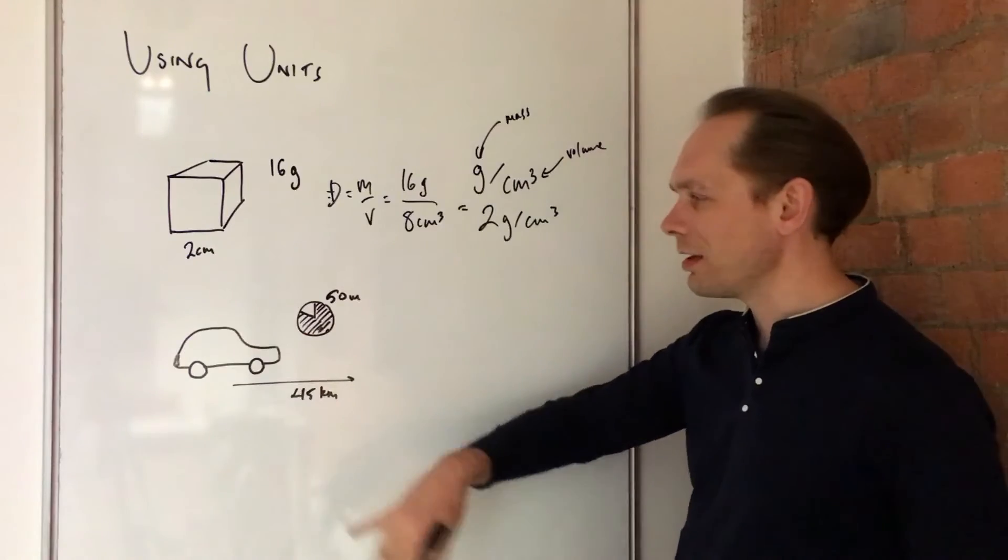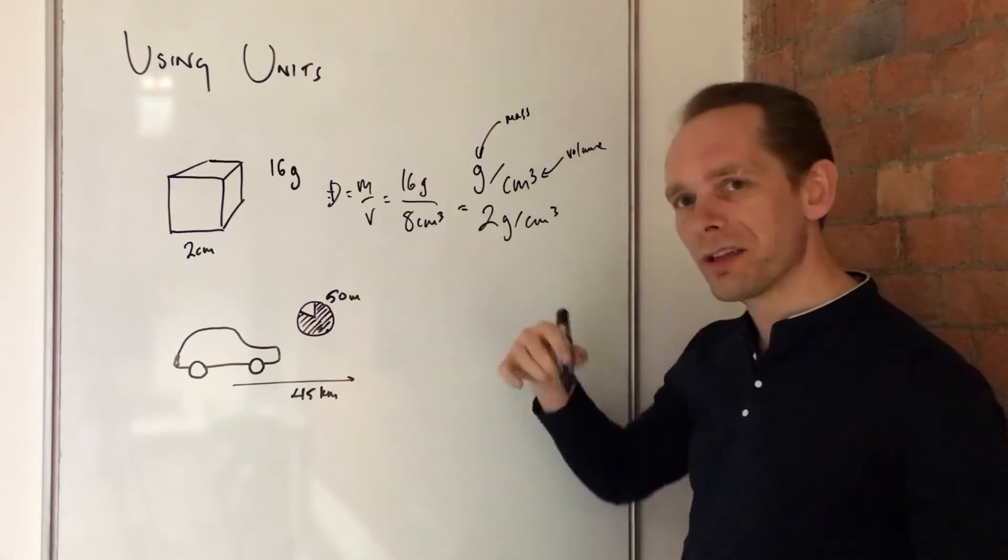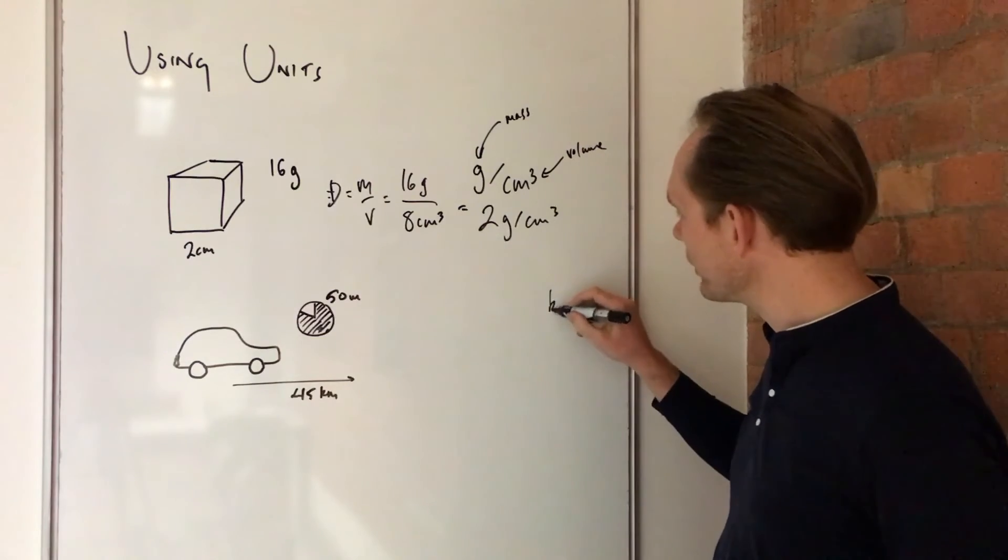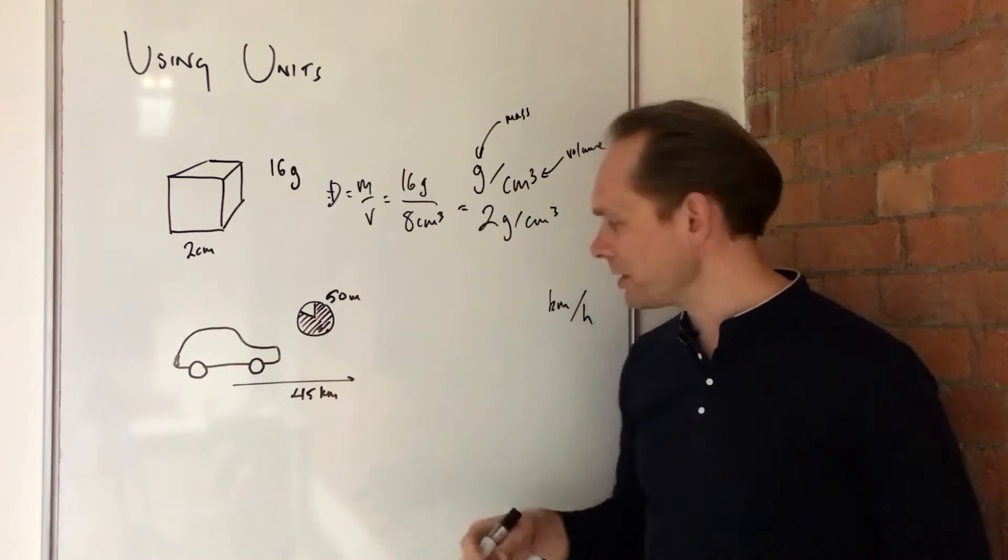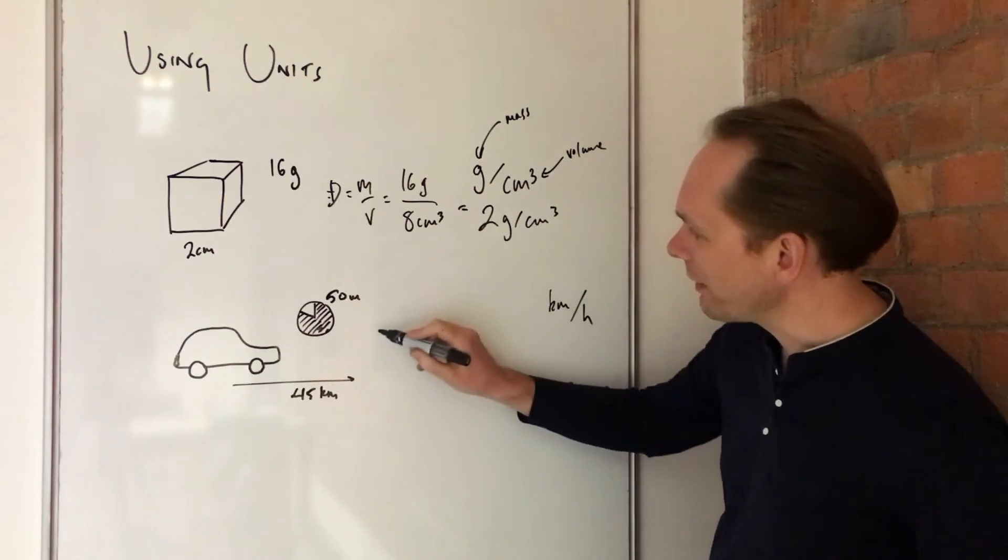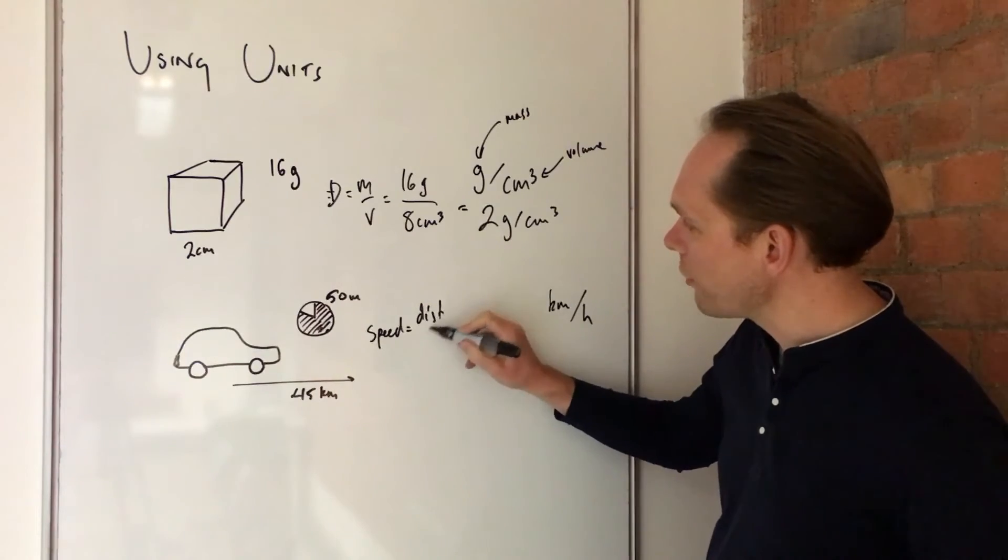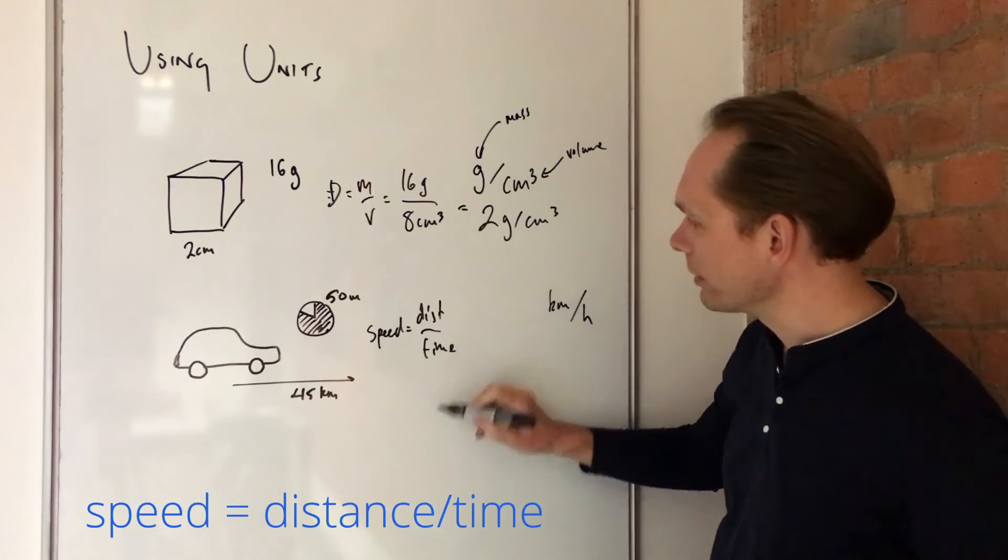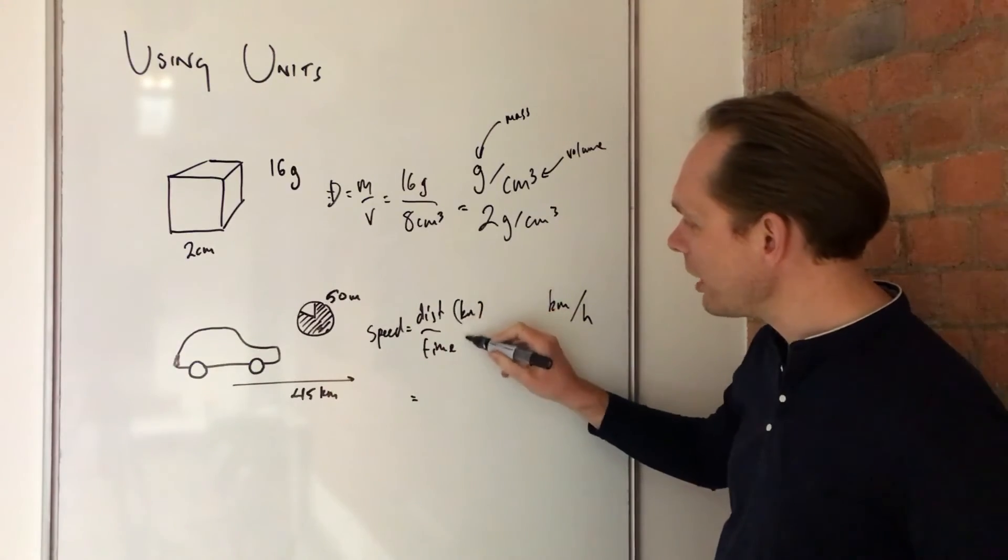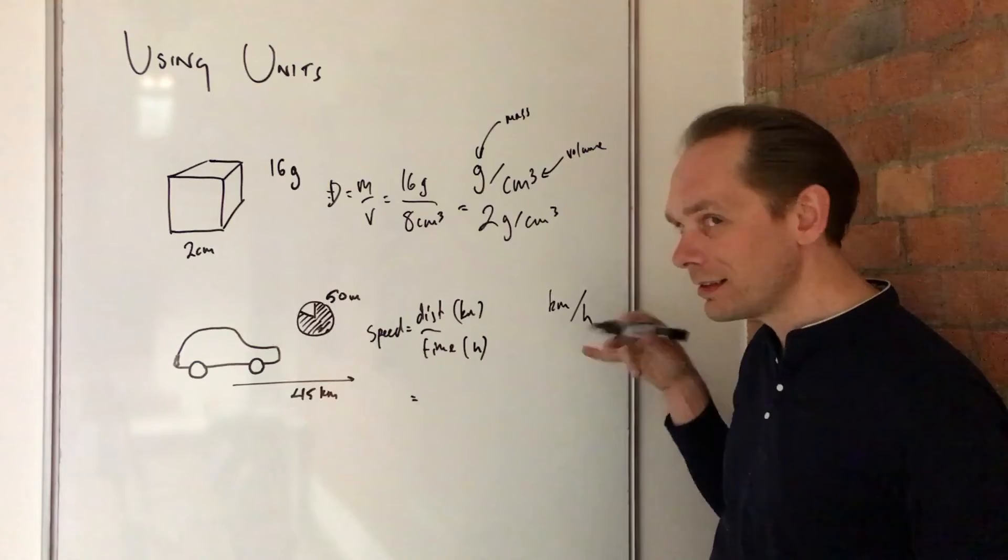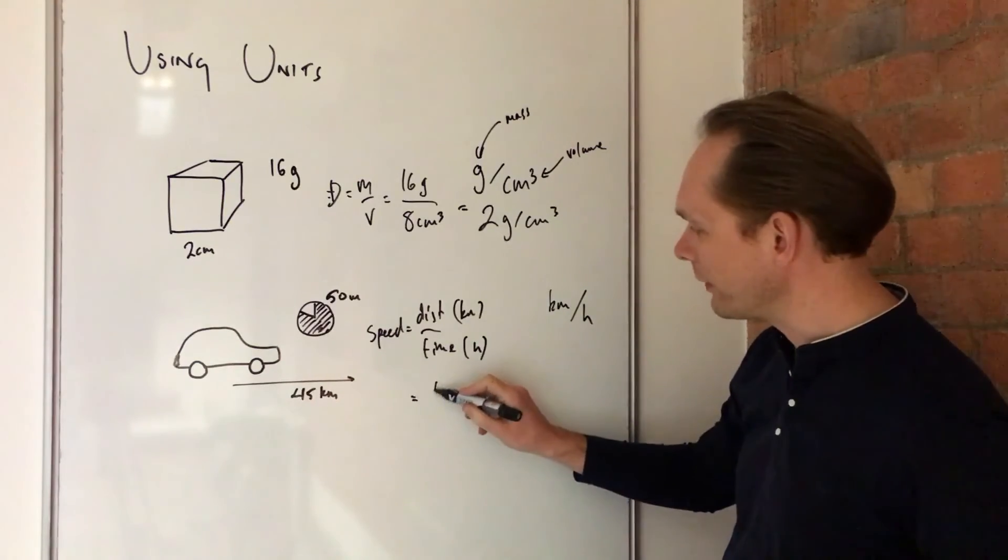Same here. We want the speed of this car, which, by the way, awesome drawing, huh? We know that the speed is measured in kilometers per hour. You could do meters per second as well, but we're talking about a car. So kilometers per hour. So we're going to need to say speed is distance over time. Well, I'm going to run out of room. I'm going to take another line. So the distance is in kilometers and the time is in hours, because that's what the unit is leading us to do. So distance in kilometers is easy. We're told the car goes 45 kilometers.